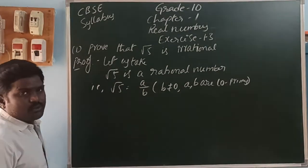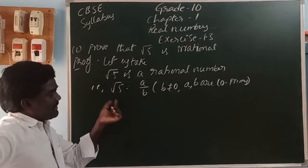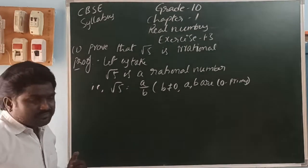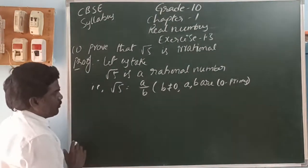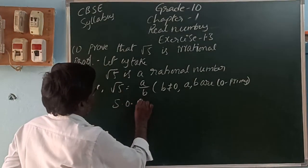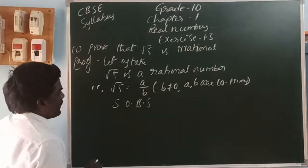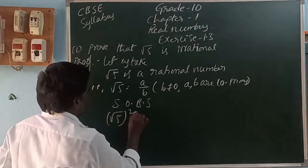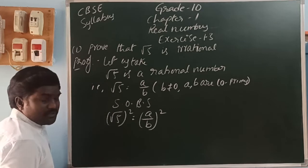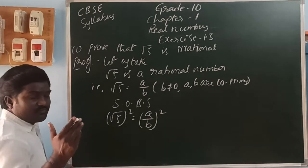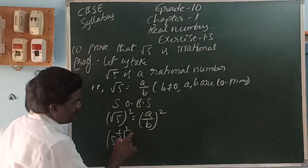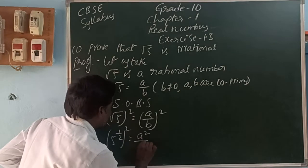So, root 5 is equal to a by b. To cancel the square root, we square both sides. Square root means the exponent form is 1 by 2. So squaring both sides on LHS and RHS: root 5 whole square equals a by b whole square. That is, 5 power 1/2 whole square equals a squared by b squared. Using the law (x/y)^m = x^m / y^m.